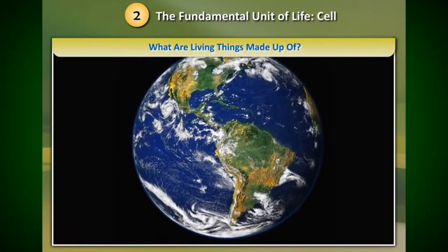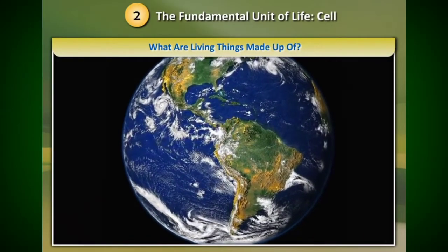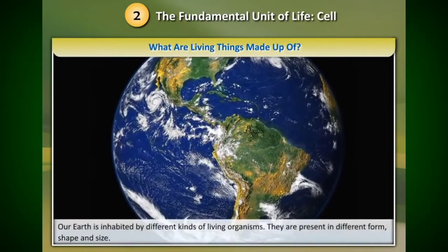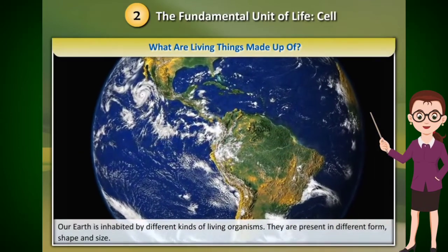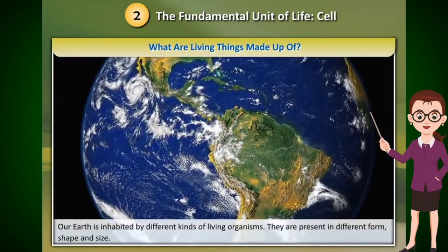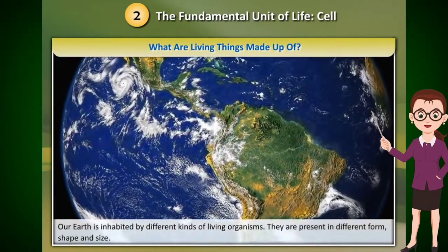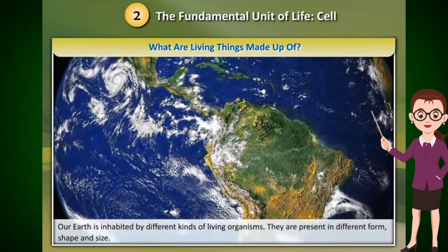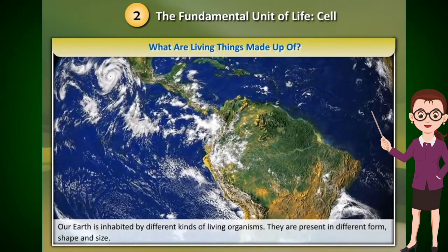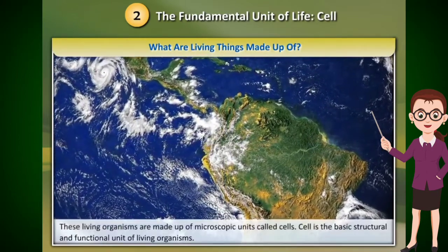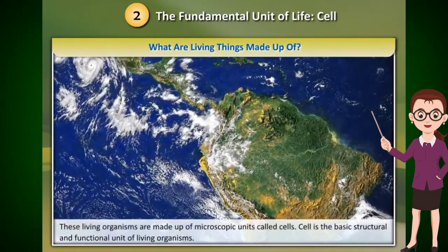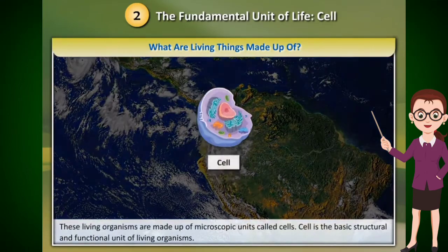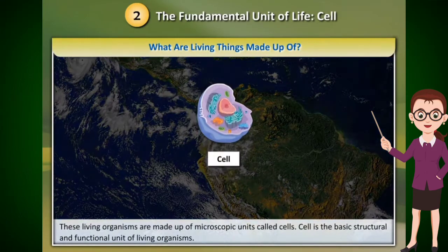What are living things made up of? Our earth is inhabited by different kinds of living organisms, present in different forms, shapes, and sizes. These living organisms are made up of microscopic units called cells. Cell is the basic structural and functional unit of living organisms.